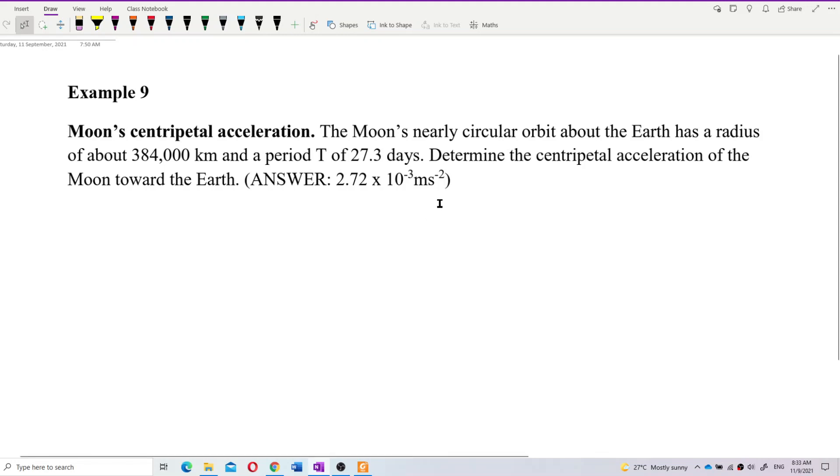Alright, now let's look at this. Moon's centripetal acceleration. The moon's nearly circular orbit around the Earth has a radius of around 384,000 km, so pay attention to the unit, and a period of 27.3 days. So this radius, this is the radius, just put it as r, and period of 27.3 days. So unit is in day.